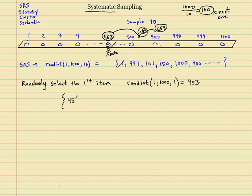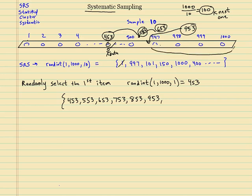So here's going to be my sample: 453, 553, 653, 753, 853, 953. Now I'm sitting right here at 953. And then I'm going to go all the way here, I'm past a thousand and I start back here. So now I'm going to be at 53, then 153, 253, and lastly 353.